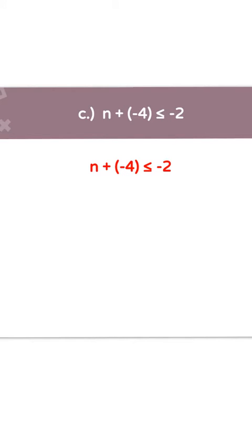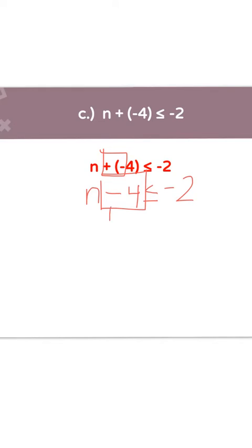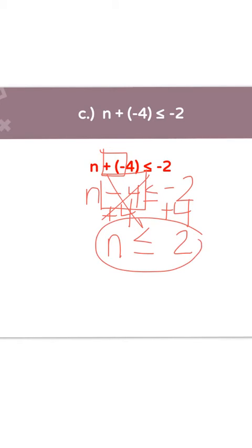Letter C: n plus negative 4 is less than or equal to negative 2. First, combine the two signs: a positive times a negative is a negative, so rewrite as n minus 4 is less than or equal to negative 2. Now get rid of the minus 4 by adding 4 to both sides. That leaves n is less than or equal to. You have a negative 2 and a positive 4 — different signs, so subtract: 4 minus 2 is 2. Since 4 is the bigger number, it stays positive. Your answer is n is less than or equal to 2.